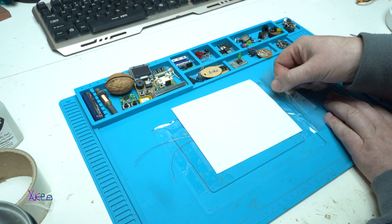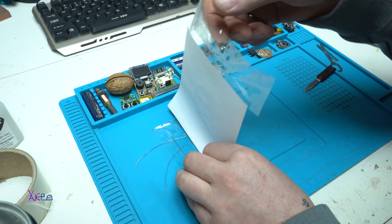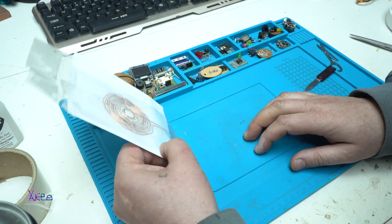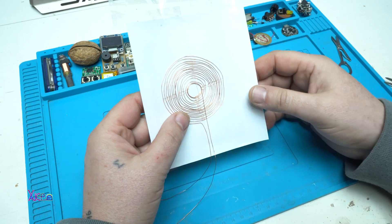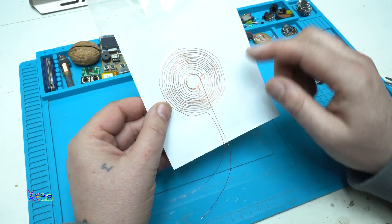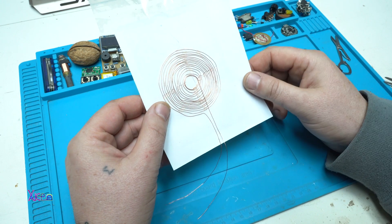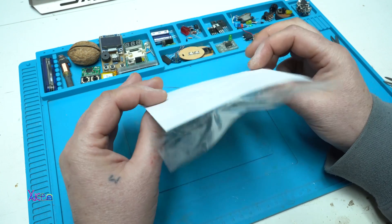I'm going to remove it from this. Okay. So far, we have copper wires and a paper.